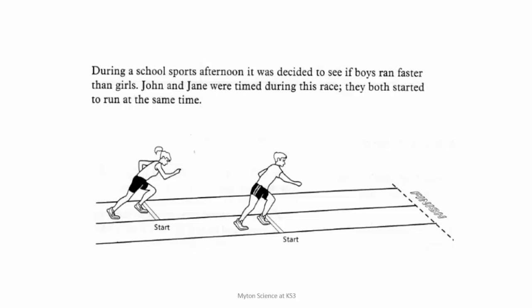During a school sports afternoon it was decided to see if boys ran faster than girls. John and Jane were timed during this race and they both started to run at the same time. You have 10 seconds to decide what you think might be unfair about this practical. If you said it was unfair because they weren't starting at the same point, that would be correct — John has to run a shorter distance than Jane, so that will mean John is more likely to finish before her, making it an unfair test. If you were going to evaluate this, you would ensure that next time they started at the exact same point.